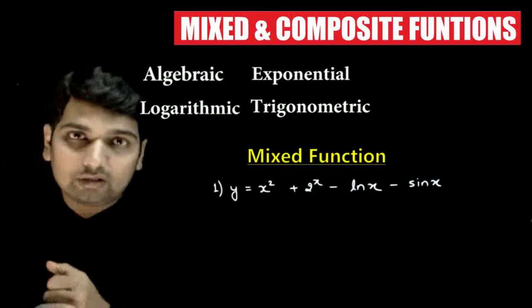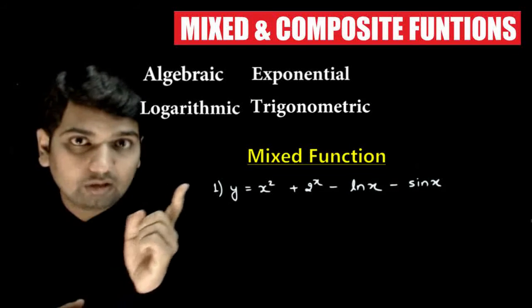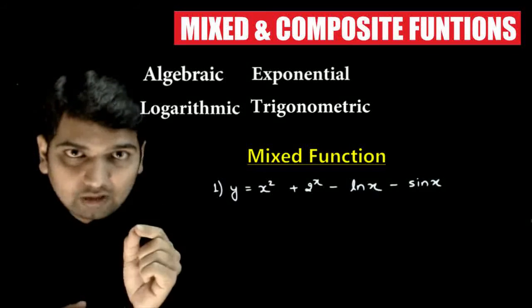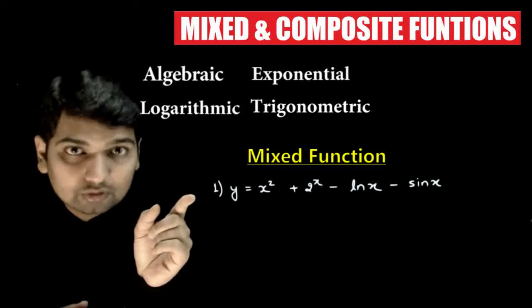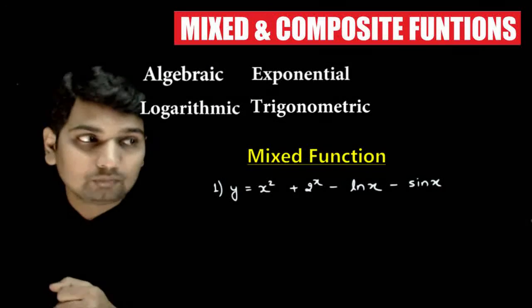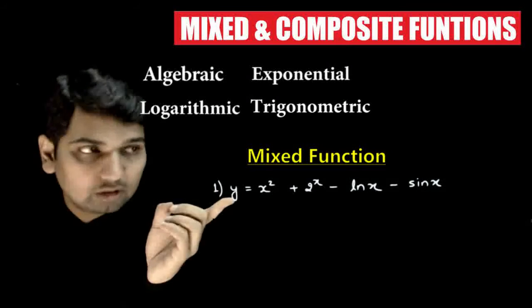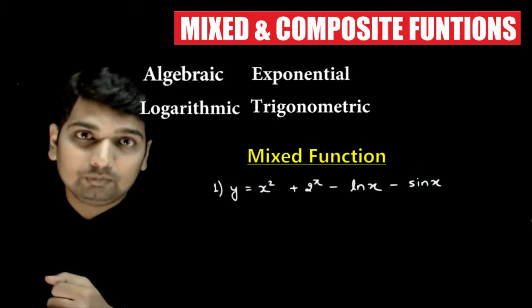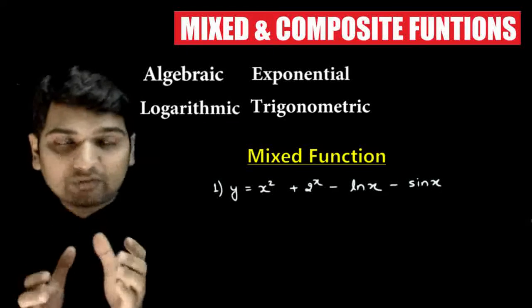We have 2^x which means exponential. In algebraic the base is variable and power is constant; in exponential the base is constant and power is variable. Then ln x, which is natural log, a logarithmic function, minus sin x which is trigonometric function. We call them mixed functions.